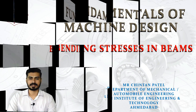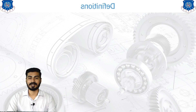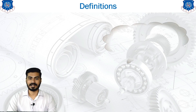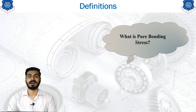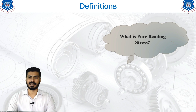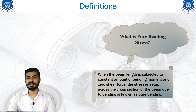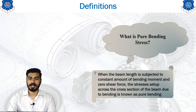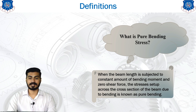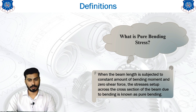Let's get started with the first slide where we will see a definition regarding the bending stress. This is one type of assumption - the definition of pure bending. So what is pure bending and what is pure bending stress? When a beam length is subjected to a constant amount of bending moment and zero shear force, the stress set up across the cross section of the beam due to the bending is known as pure bending.